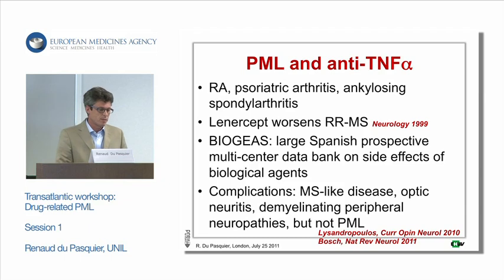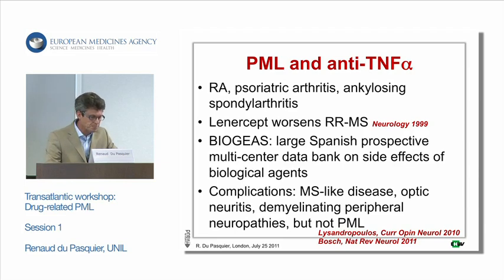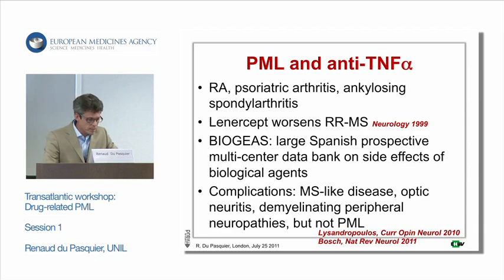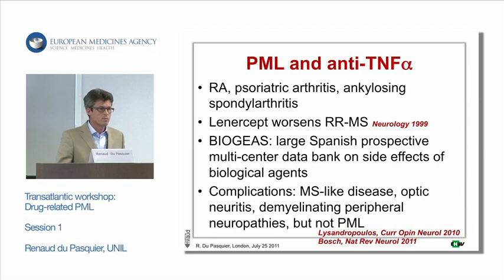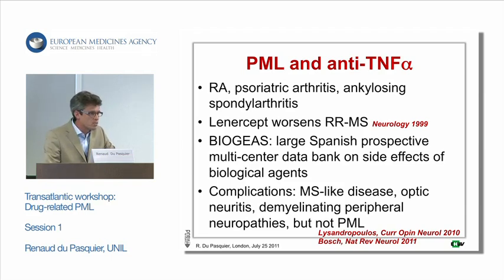Finally, anti-TNF-alpha agents are a group of drugs indicated for rheumatoid arthritis and other arthritides. One of these, lenercept, worsened relapsing-remitting MS — though some authors later hypothesized this was due to the excipient rather than the drug itself. There is a Spanish initiative, BioGeas, a prospective multicenter databank on side effects of biological agents with particular interest in anti-TNF-alpha. They have reported associations with MS-like disease, optic neuritis, and demyelinating peripheral neuropathies, but no convincing cases of PML.